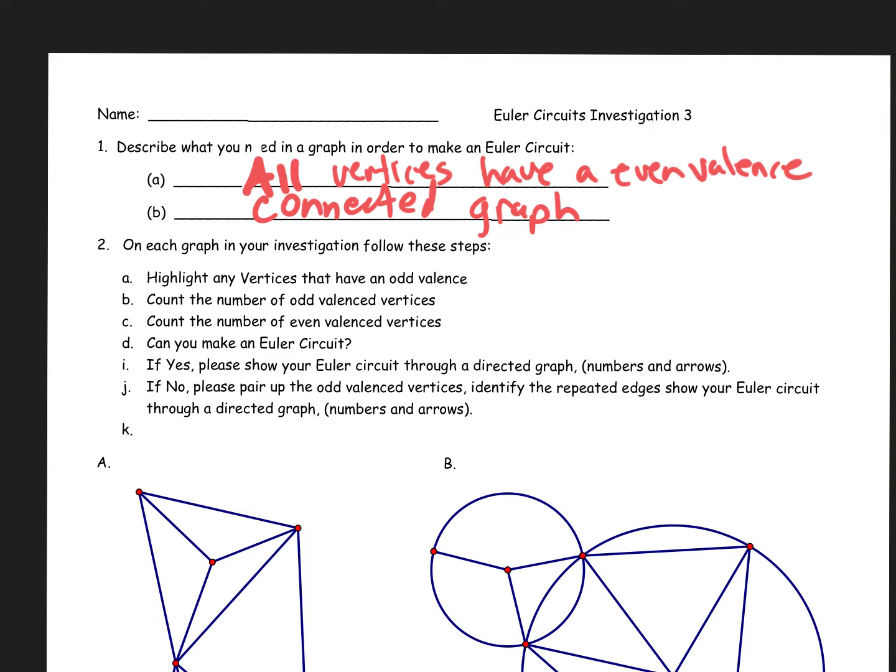So you guys want to see an example or you guys want to try it for 10 minutes? Let me explain the process. So you look at the graph and you decide what the valence of every vertex is. Write it in there. And if there is a vertex that has an odd valence in the graph, there's no Euler circuit.